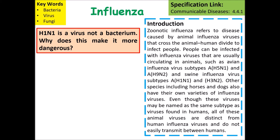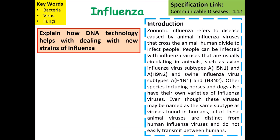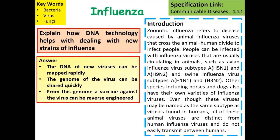H1N1 is a virus, not a bacteria — why does this make it more dangerous? Viruses infect and take over cells to produce more of themselves. Because the virus is inside the cell, it is hard to get medicines inside to stop it. Viruses also mutate more rapidly than bacteria, so new strains we are not immune to can evolve quickly. Regarding DNA technology: the DNA of new viruses can be mapped rapidly, the genome can be shared quickly, and from this genome a vaccine can be reverse-engineered, then spread and tested on humans.